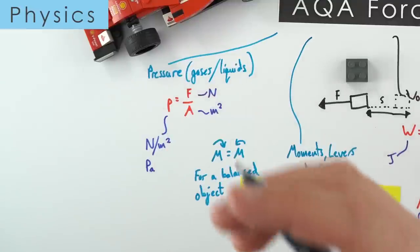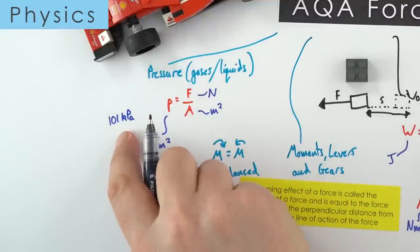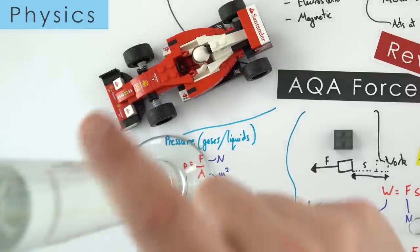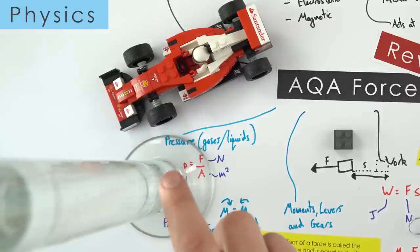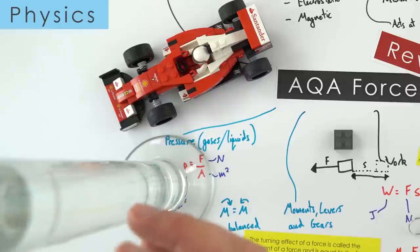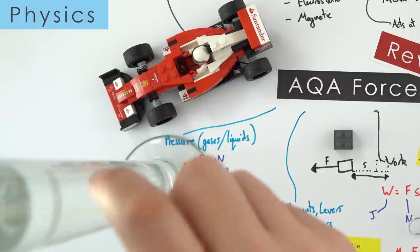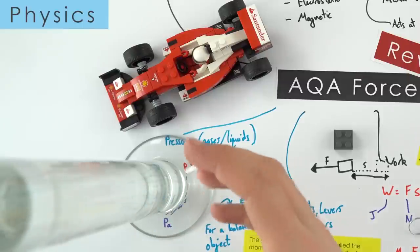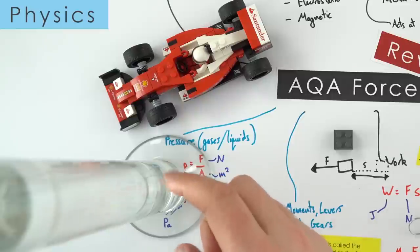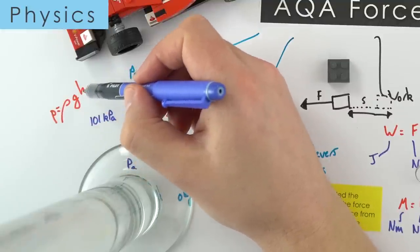We can also think about pressure in a column of liquid. The deeper you go, the more liquid is above you, so pressure increases with depth. It also depends on the density of the liquid — mercury is denser than water, so it exerts more pressure. And gravitational field strength matters too: on a bigger planet like Jupiter, pressure increases more rapidly with depth. The equation is p = ρgh, where ρ is density in kg/m³, g is gravitational field strength in N/kg, and h is height in metres, giving pressure in Pascals.